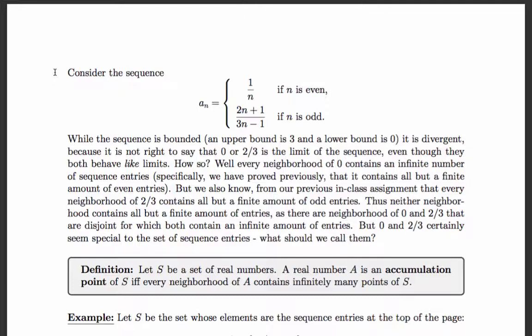But certainly they seem special. If I take the set of all sequence entries, certainly 0 and 2/3 stand out. So let's call them something. Let S be a set of real numbers. Then a real number A is an accumulation point of S if and only if every neighborhood of A contains infinitely many points of S.